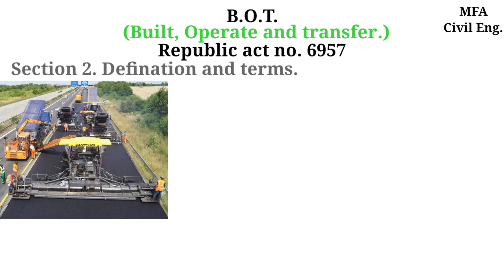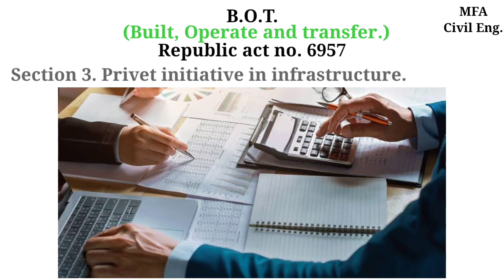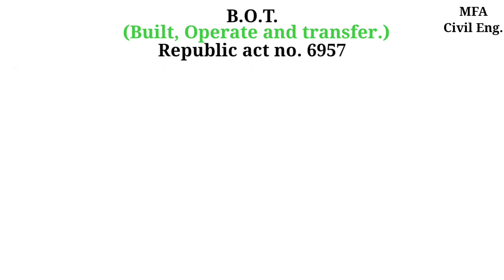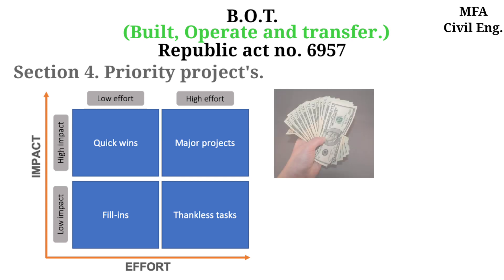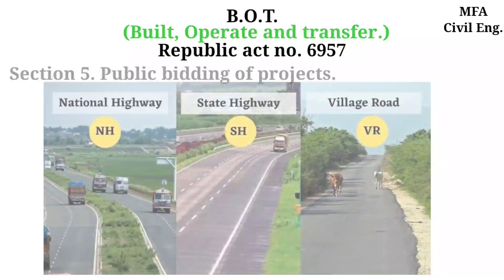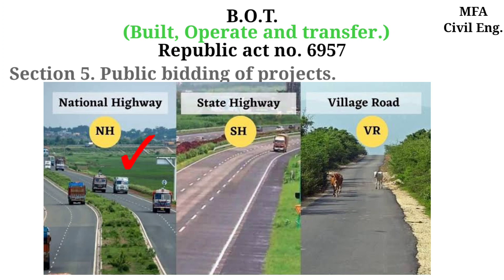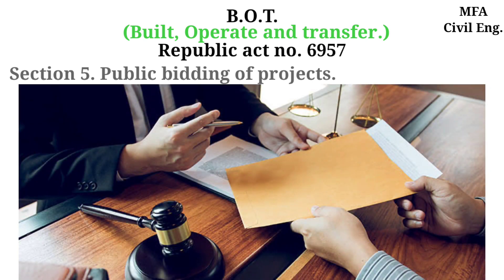Section 2 covers the Build Operate and Transfer scheme, which is operated by the government itself. The provision of private finance is made under Section 3. Under Section 4, contractors must include priority projects that may be financed, constructed, operated, and maintained. After approval of a project mentioned in Section 4, the head of the infrastructure agency or government unit shall cause publication once every week for three consecutive weeks in at least one local newspaper. The lowest complying bid is then awarded.